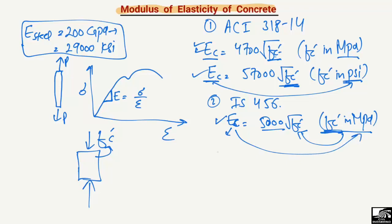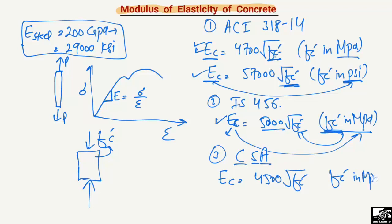The third code is the CSA — the Canadian Standards Association — which provides: Ec = 4500 × √(f'c), where f'c is in MPa. This equation uses a coefficient of 4500 instead, and the resulting modulus of elasticity is again in MPa.